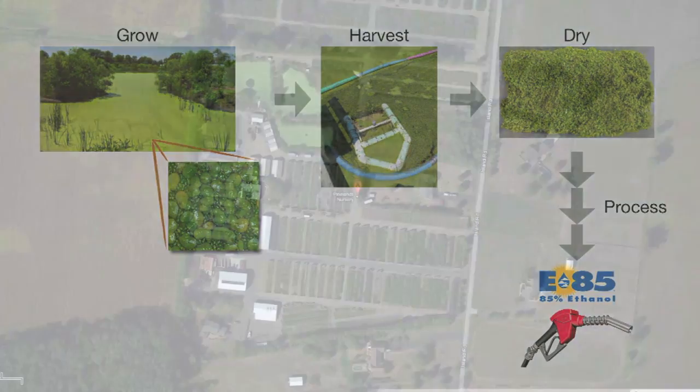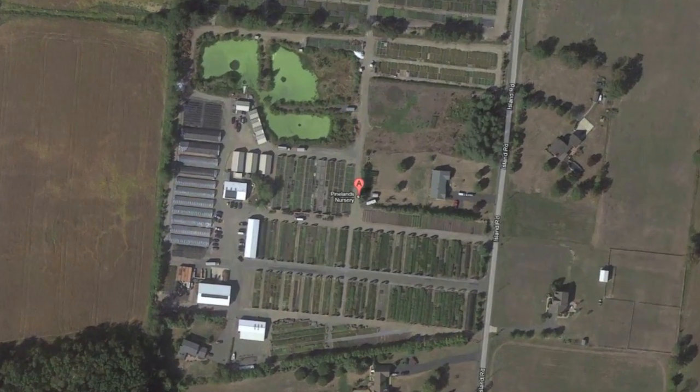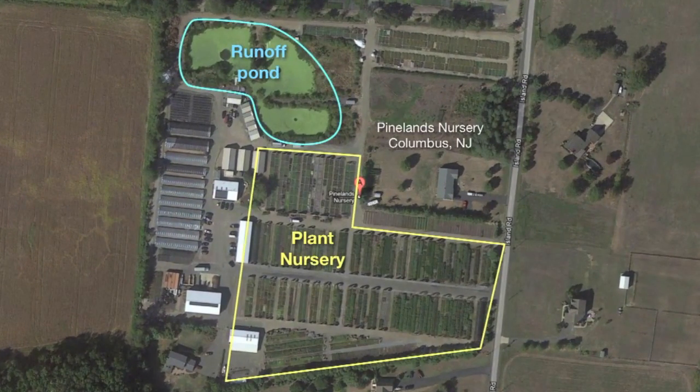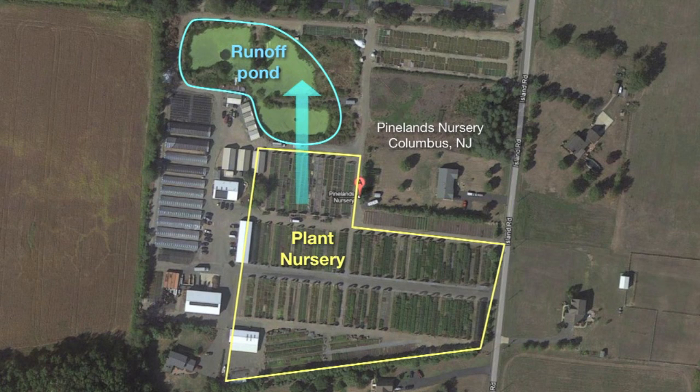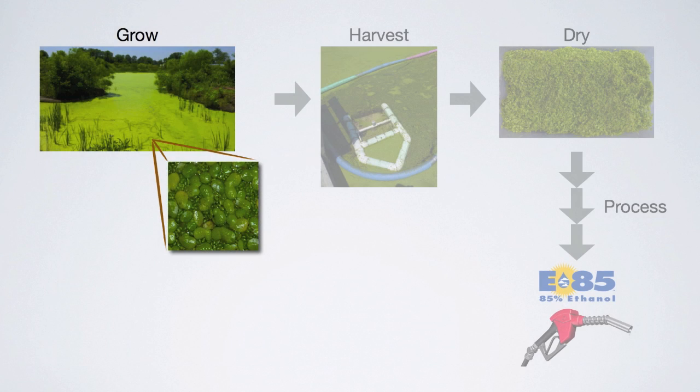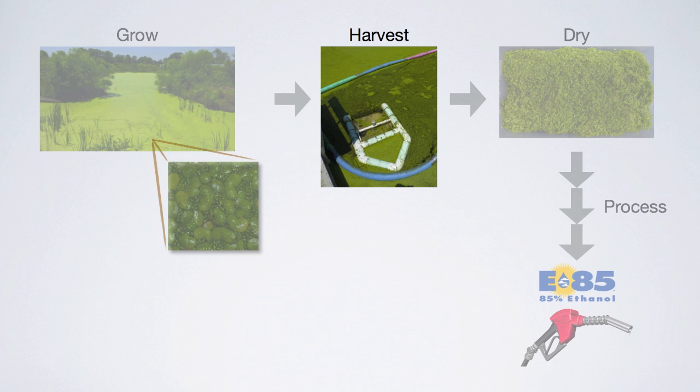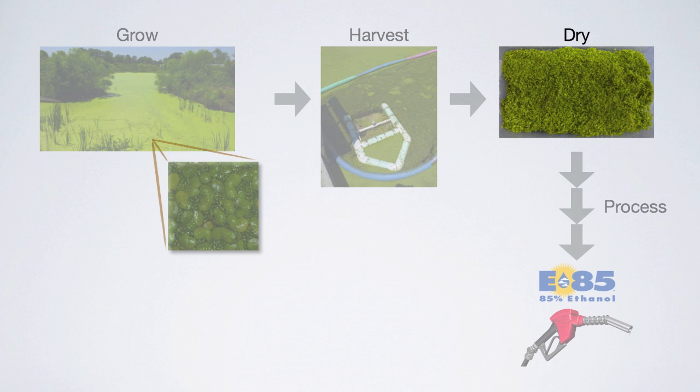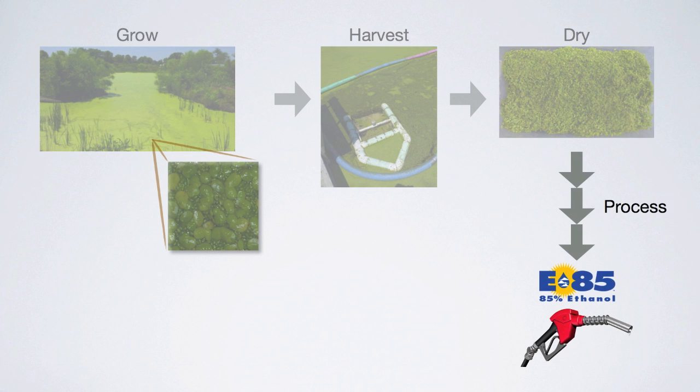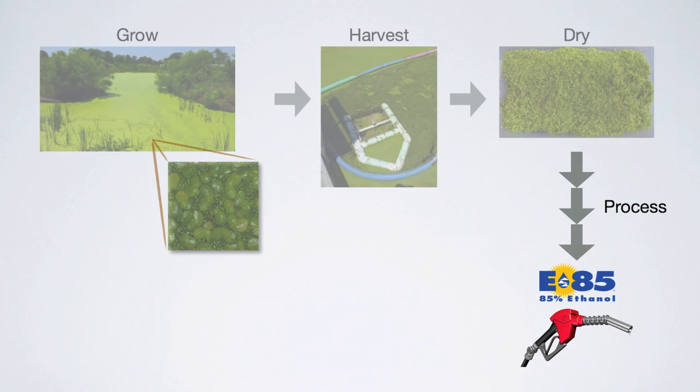To do this, we grow duckweed on a pond that receives fertilizer runoff from a nearby plant nursery. The duckweed in the pond absorb the excess nutrients and use them to grow. We harvest the duckweed using a motorized pond skimmer. After drying the duckweed, starch is extracted and converted into ethanol using existing methods.